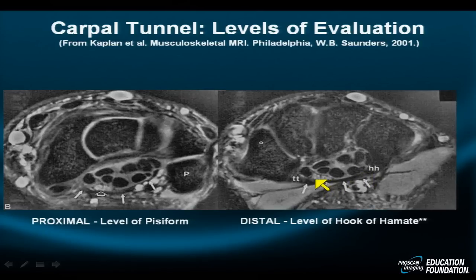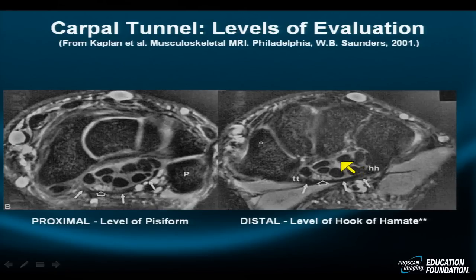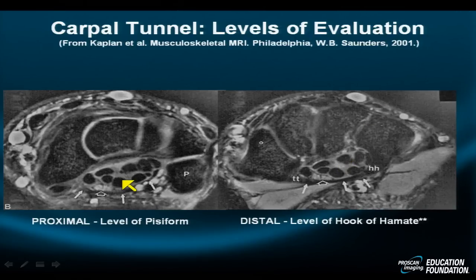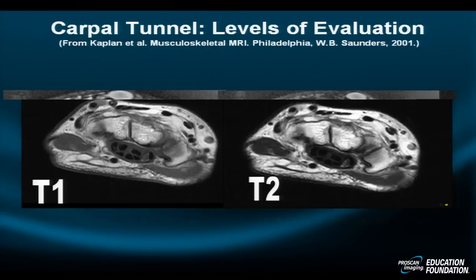Therefore, the median nerve at this level is also slightly flatter. You can see the median nerve dividing into two separate bundles just prior to its bifurcation. The flexor tendons are surrounded by thin, slightly hyperintense sheaths. These sheaths may thicken and become more hyperintense, and this is a reliable sign of clinical carpal tunnel syndrome. The amount of hyperintensity shown in these two examples demonstrates a normal sheath thickness.